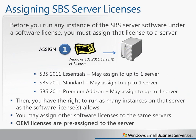The first thing you'll need to do is assign your SBS server license to a server that you're going to run it on. You can assign either Essentials, Standard, or the Premium add-on on up to one server. Once you've assigned the license to a server, you have the right to run as many instances as the software license allows. You can also assign other software licenses to the same server. OEM licenses are pre-assigned to the server — that is a very key distinction when making a purchase through OEMs.